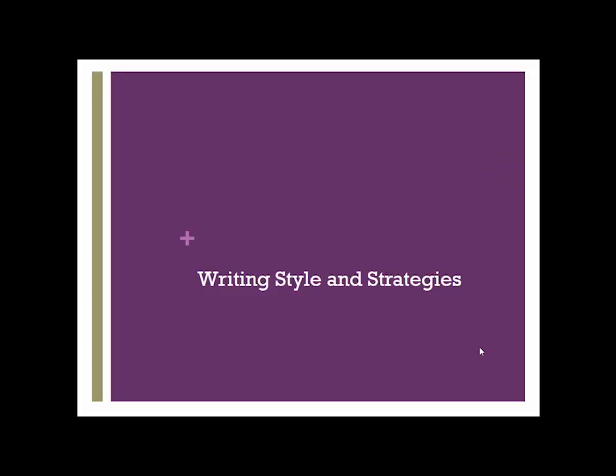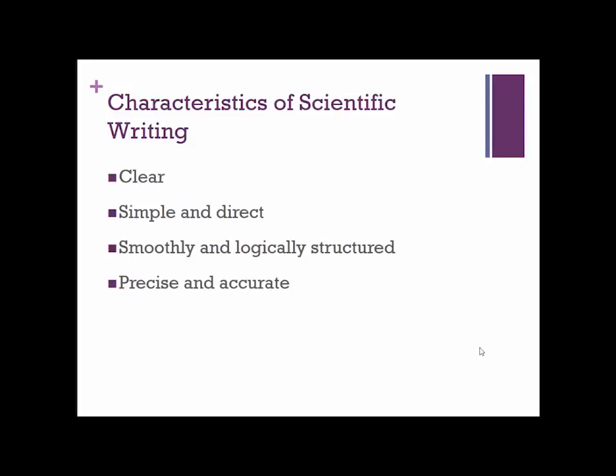We've been talking a lot about overarching structural issues and organization, but my specialty and favorite thing to talk about is issues of writing style and strategies for scientific writing. Some characteristics of good scientific writing include clarity, simple and direct writing, smooth and logical structure, and precision and accuracy. All of these things might sound great, but the question is how do you accomplish this — so we'll talk about that for the next couple of minutes.